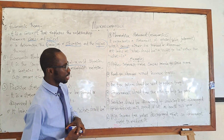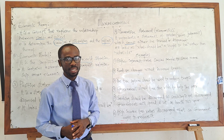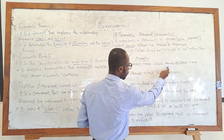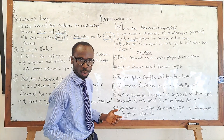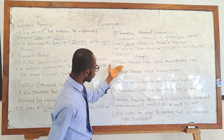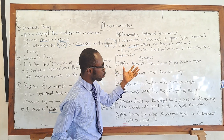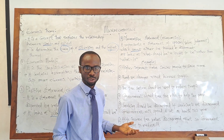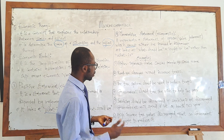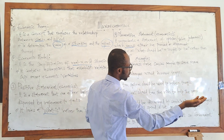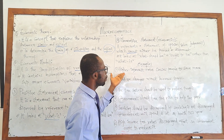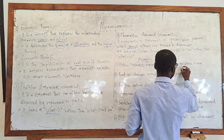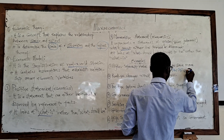Let us look at some examples. Example one: 'Higher interest rate causes people to save more.' Whether it is true or not, what we know is that this statement could be proved or disproved with reference to facts. We can go to a country, conduct data collection, and find out whether higher interest rates cause people to save more or not. So this is a positive statement.